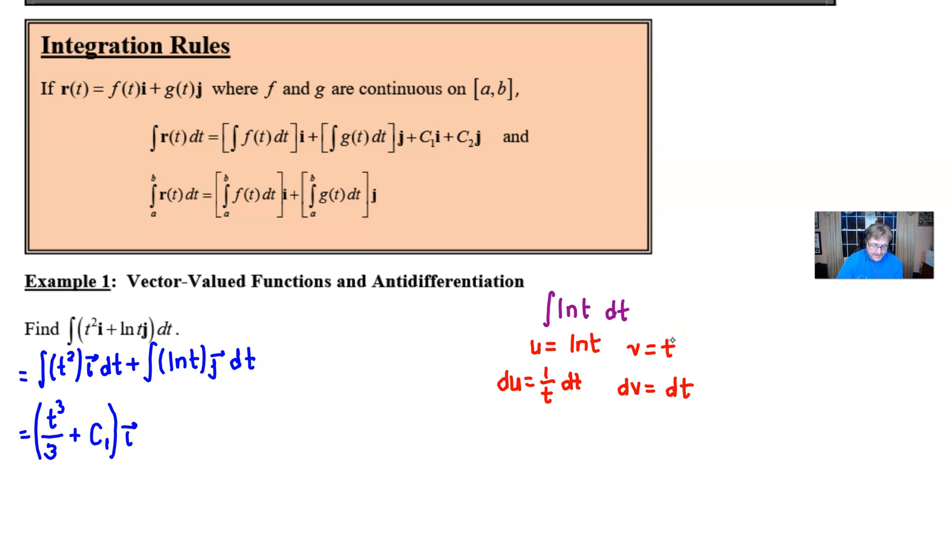So that allows us to piece together our integration formula, which is going to say u times v, or t times the natural log of t in that order, and then we subtract the integration of the v multiplied by the du.